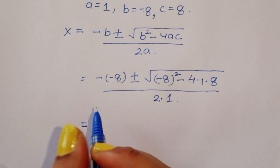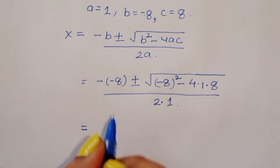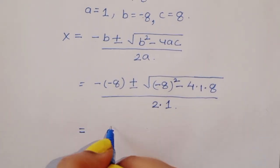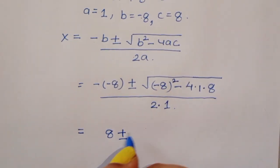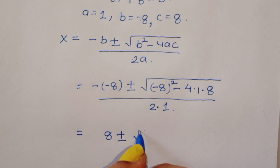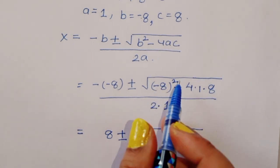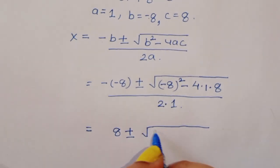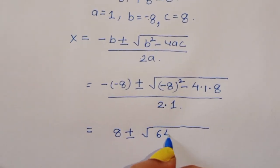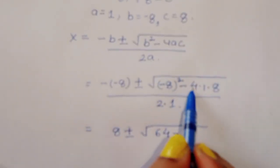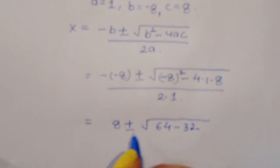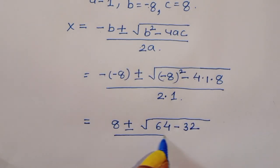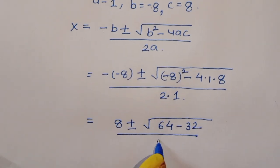This becomes: 8 plus or minus square root of 64 minus 32, divided by 2.